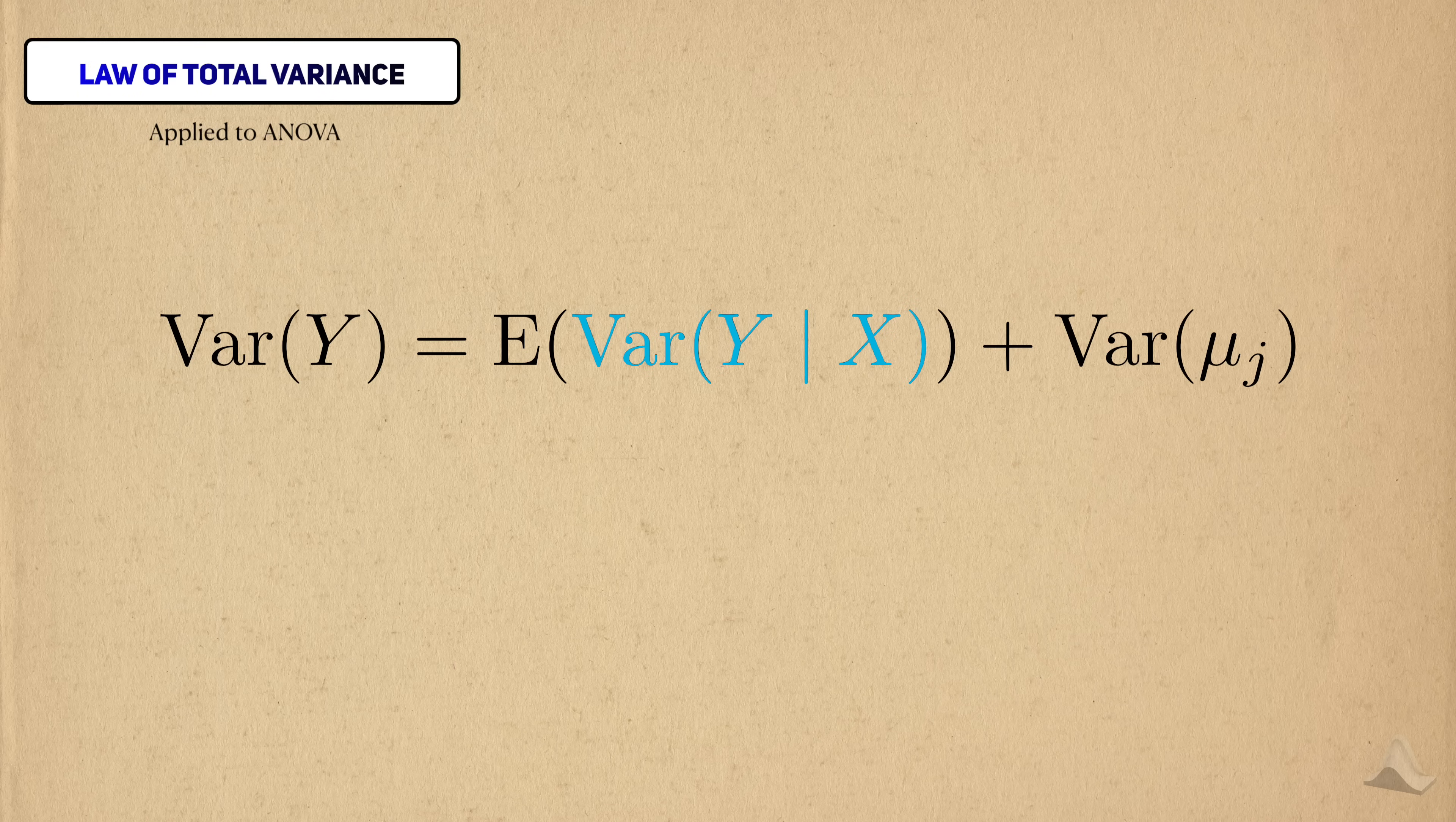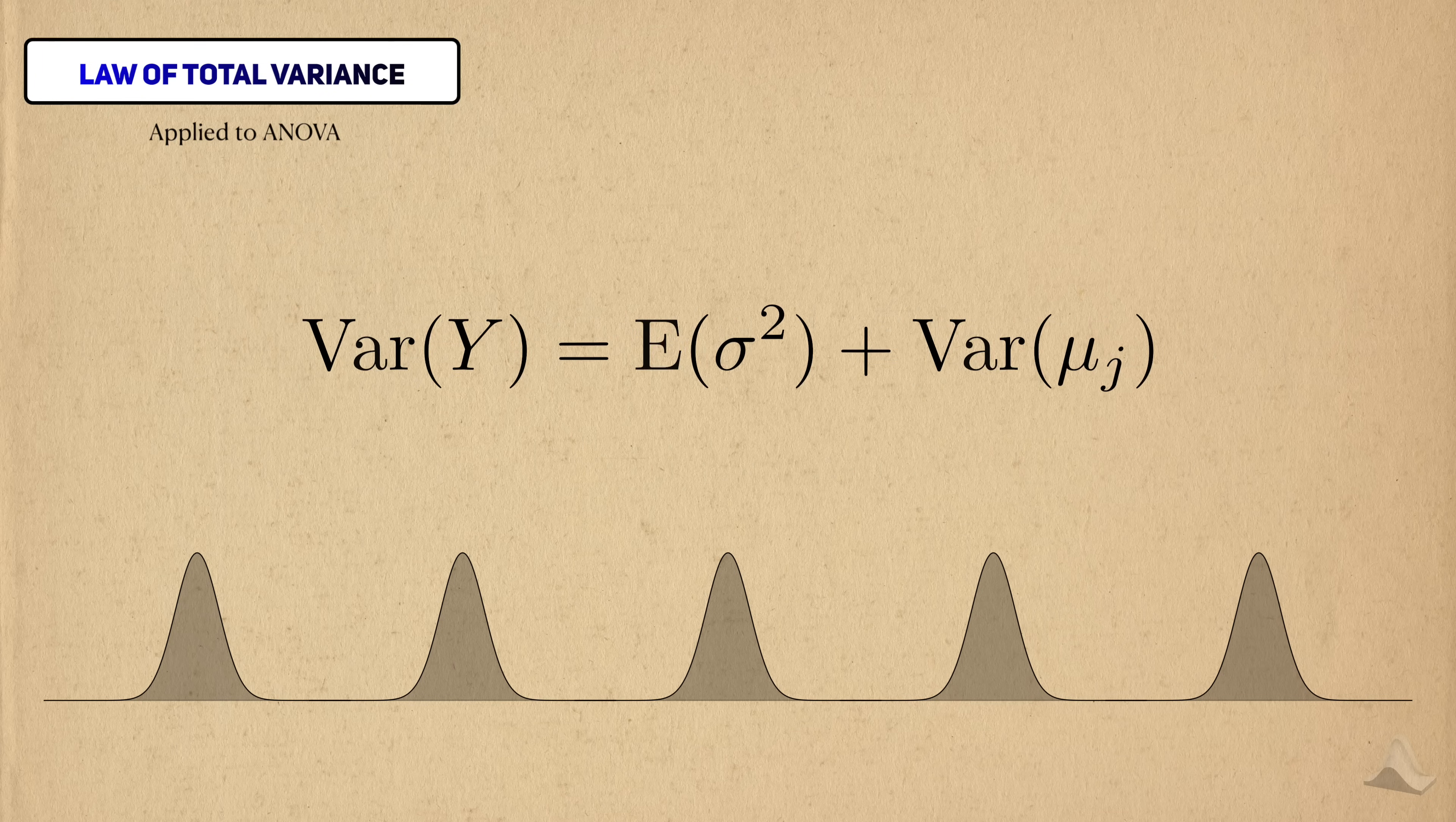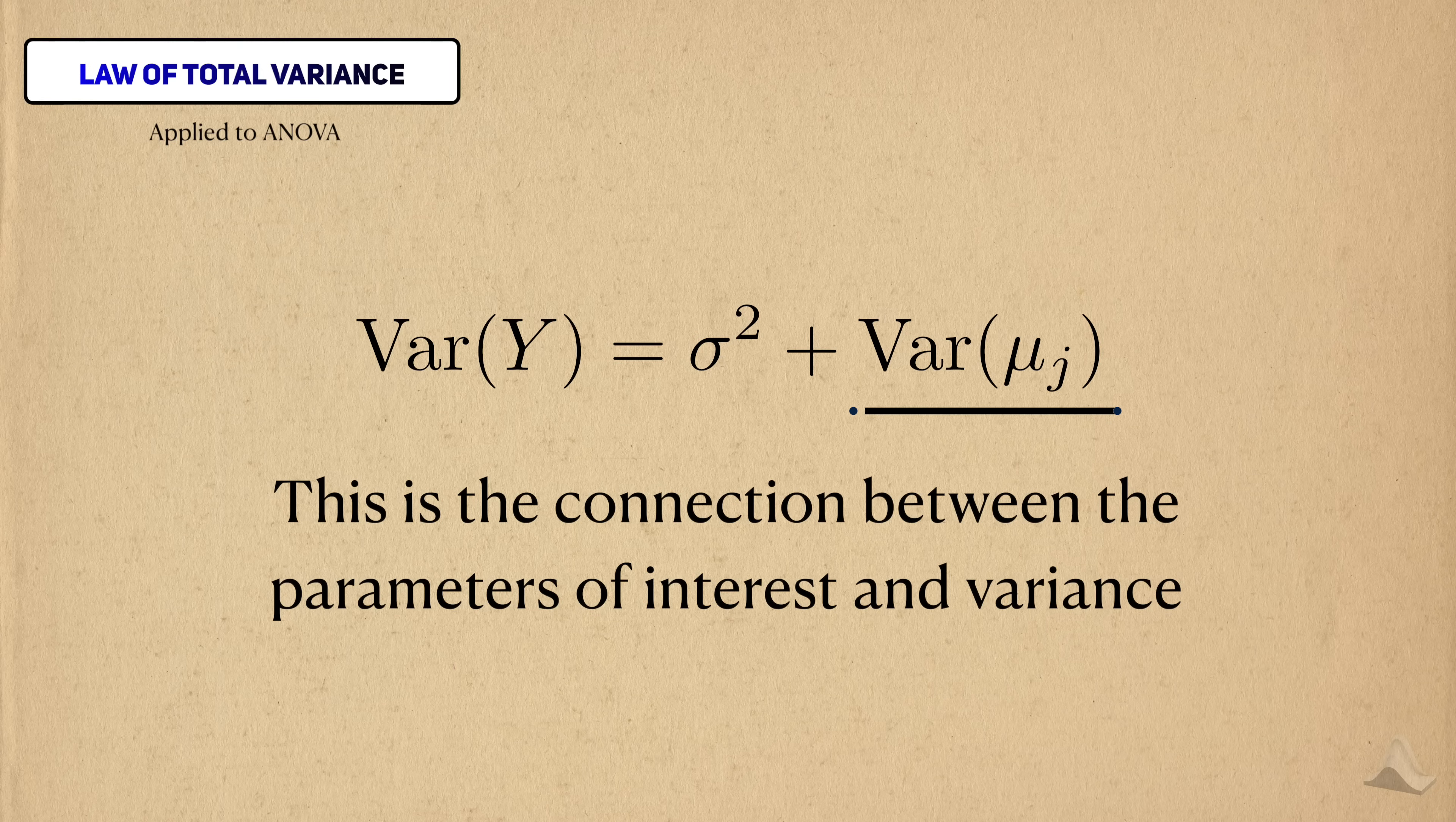This term here represents the group variances. In the general case, all of the group variances can be different, but in this case, we made an assumption. We assume that all of the group variances were the same. This means that this inner variance is just a single number, and since it's the same in all the groups, it's not random, so we don't need an expectation. What we're left in this term is a shared group variance, sigma squared. And for all intents and purposes, this is just a number that doesn't change. But what can change is the second term. So this is the connection between our parameters of interest and the use of variance in this test.